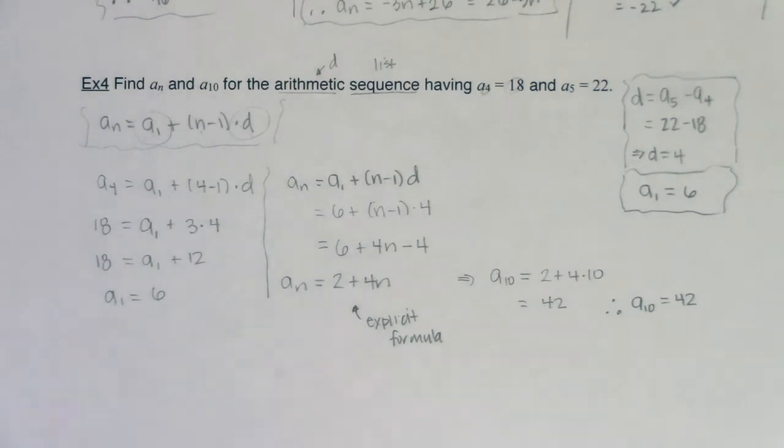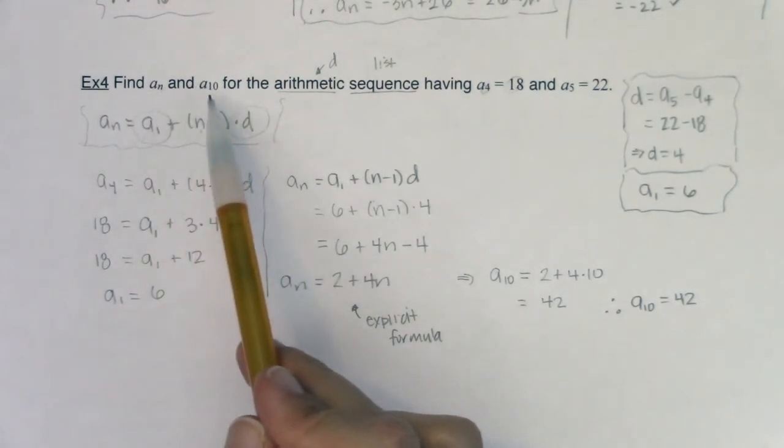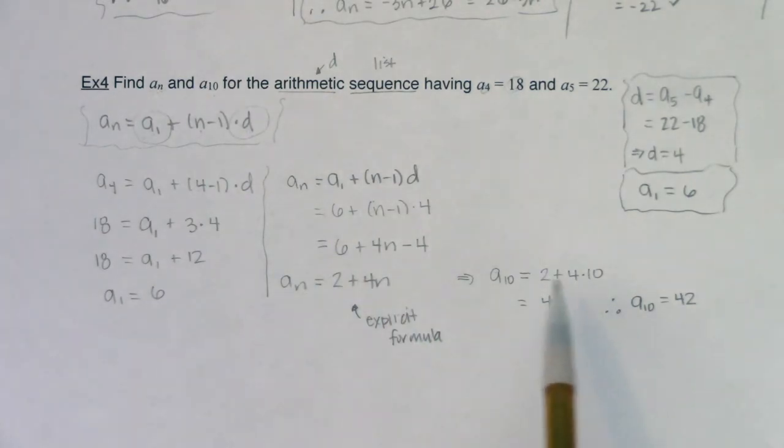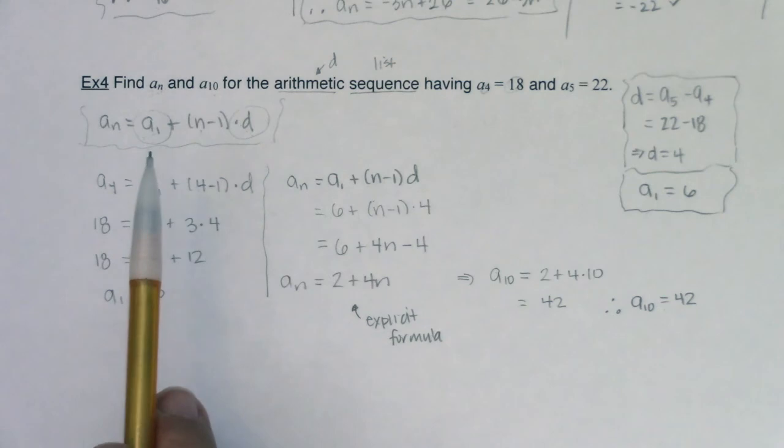But you can do it either way. So we've got a couple of ways of finding a specific term a_10 or you can find a_10 first or you can find a_n in general and then plug 10 in. So find a method that works best for you. So when we flip to the next page we're going to keep on practicing this arithmetic sequence formula and how to manipulate it. I'll see you in a few. Bye!